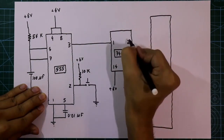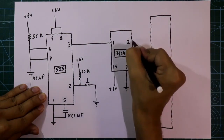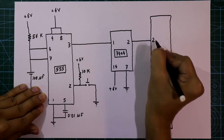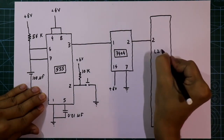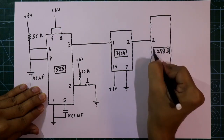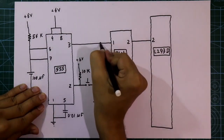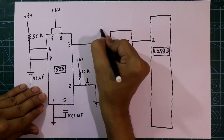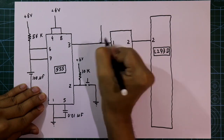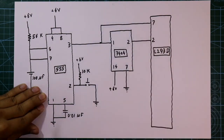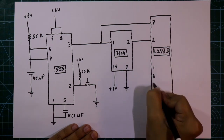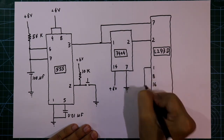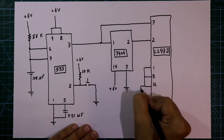Pin number 2 of 7404 is connected to pin number 2 of the L293D IC. Pin number 1 of 7404 is connected to pin number 7 of L293D. Pin numbers 1, 8, and 16 — these three are connected together and then connected to plus 6 volt.